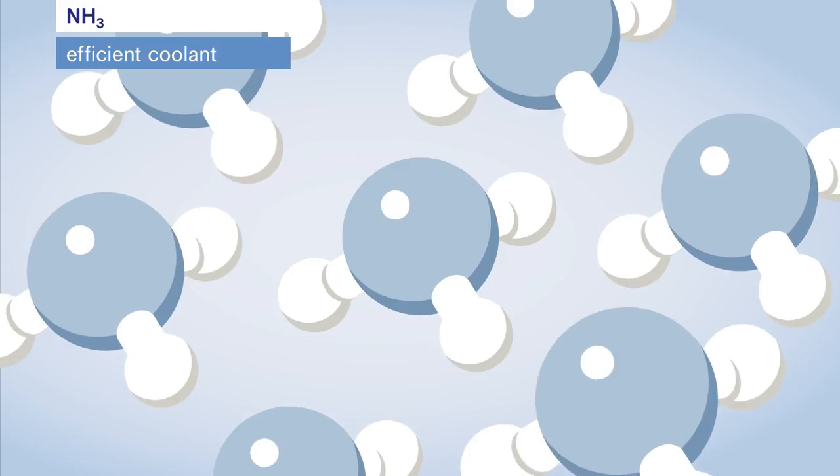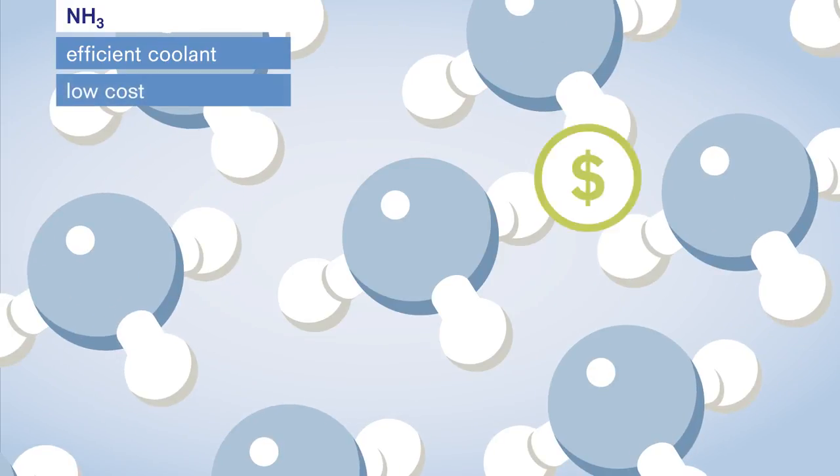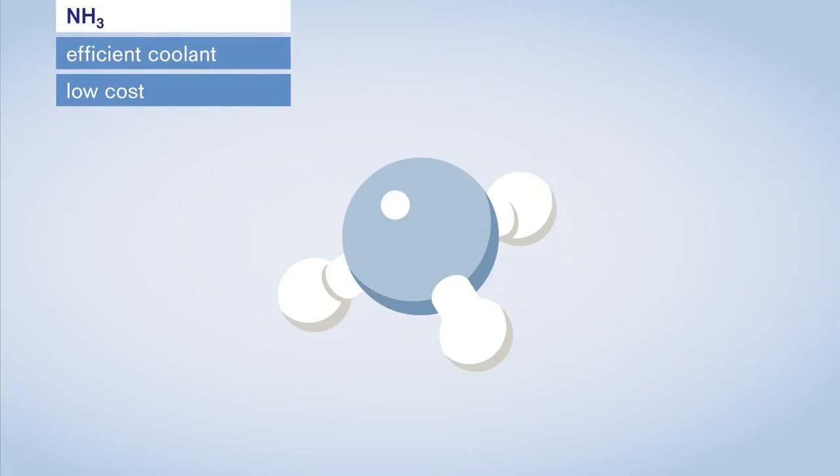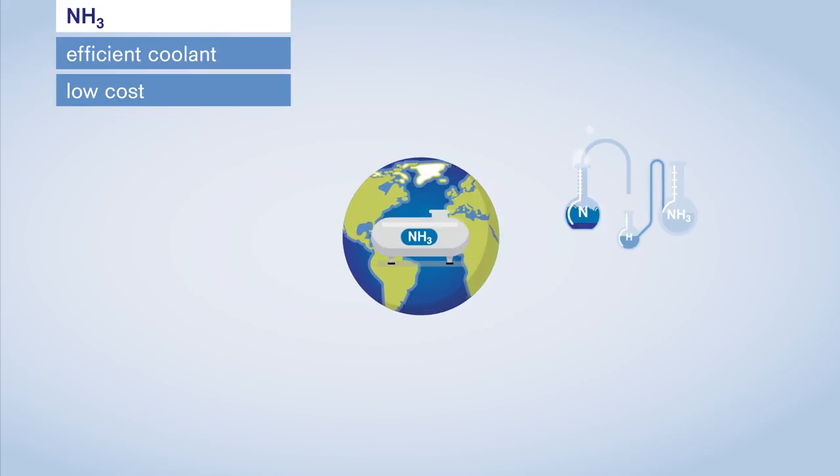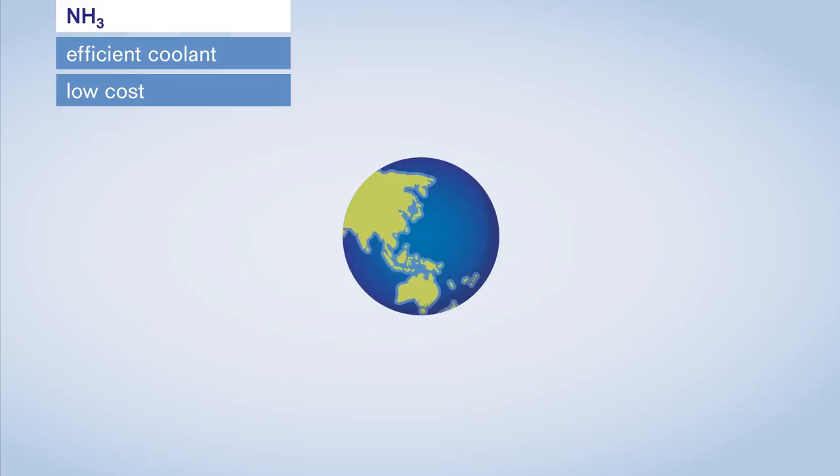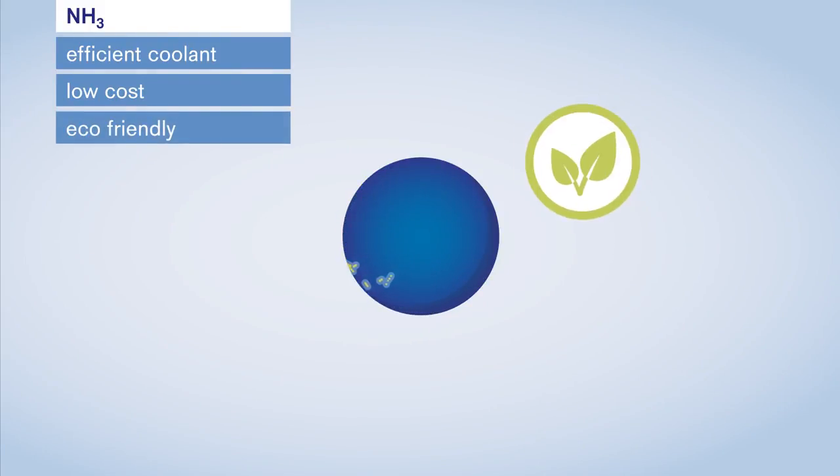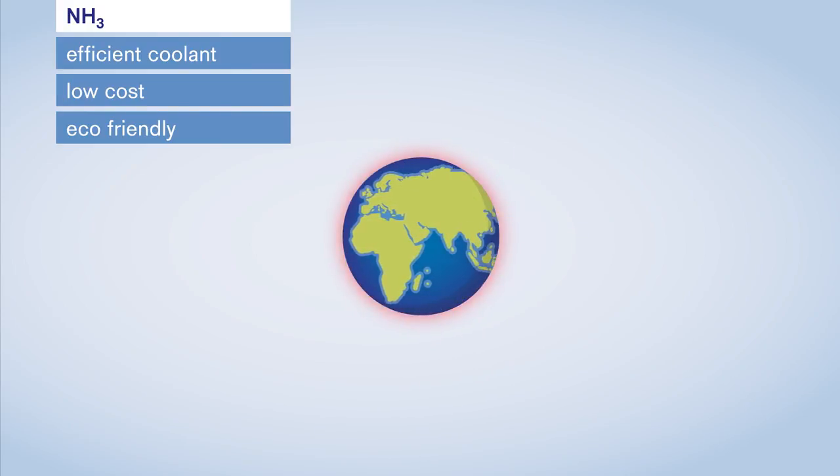Ammonia is available in unlimited quantities and is not expensive to procure. Each year, over 130 million tons of ammonia are produced globally, which makes it one of the most manufactured chemicals in the industry. Also, the substance is recommended from an environmental perspective. It neither contributes to ozone layer depletion nor global warming.